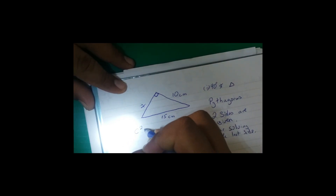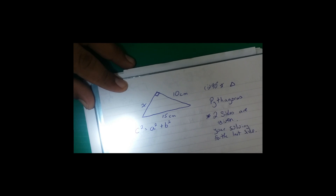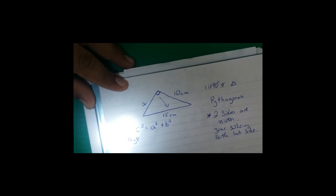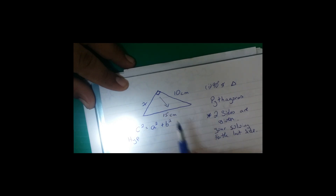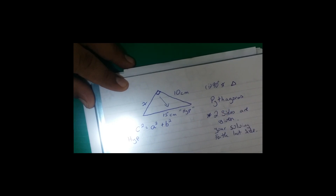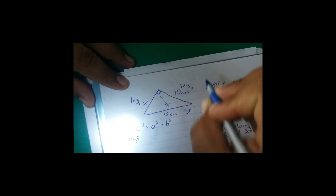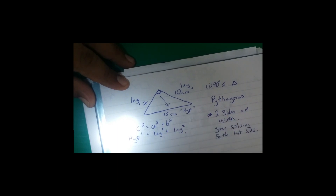We continue by writing our formula: c² = a² + b². The hypotenuse, or C, is always opposite to the 90 degrees. We need to identify the hypotenuse first. The other two sides are called legs — leg one and leg two.